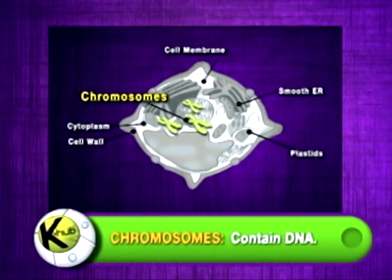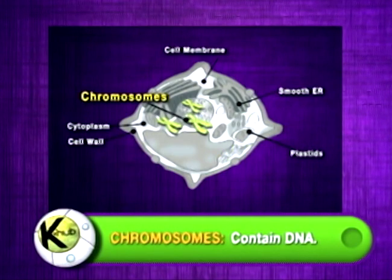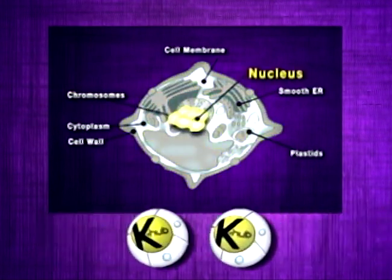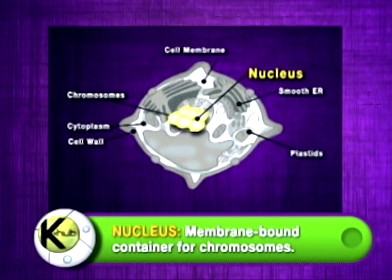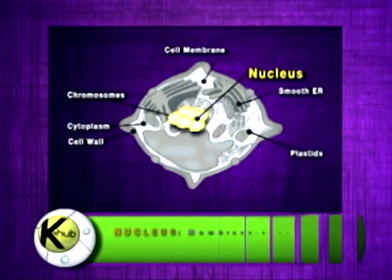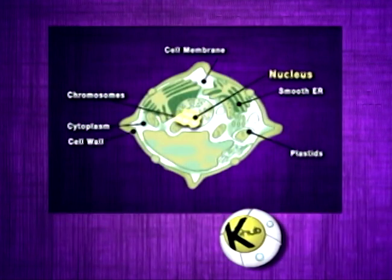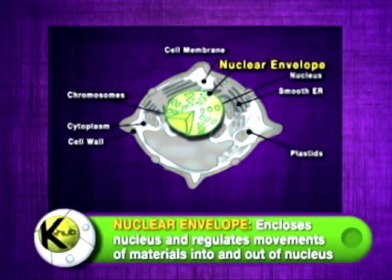Chromosomes contain the DNA. The nucleus is a membrane-bound container for chromosomes. The nuclear envelope encloses the nucleus and regulates the movement of materials into and out of the nucleus.